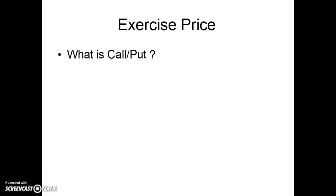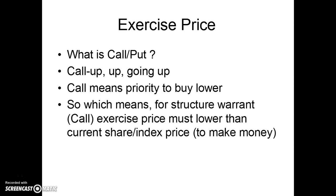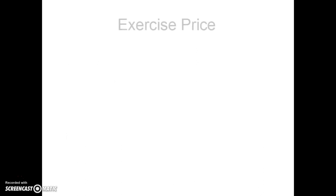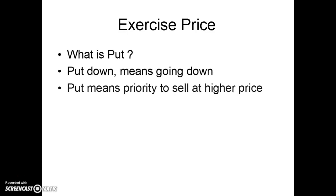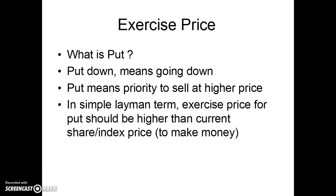I will briefly explain what is call and put. Call means the price is going up — it means the priority to buy at a lower price. For a Structure Warrant call, the exercise price must be lower than the current share price or index price if we want to make money. Put means going down — the priority to sell at a higher price, so the exercise price for put should be higher than the current share price if we want to make money.